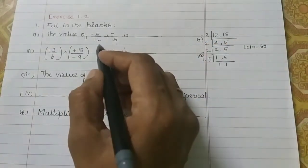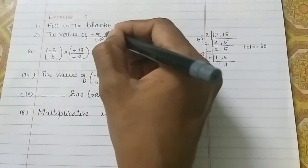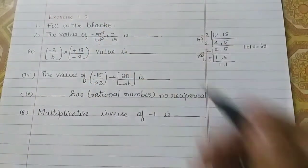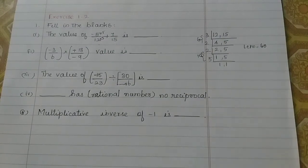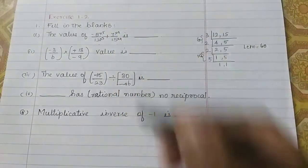So, LCM is 60. Then, denominator is 60. In the 12, 5 is 60. Then, numerator is 5 multiply. Then, here, 15 fours are 60. In the 15 tables, 4 times 60 is 60.